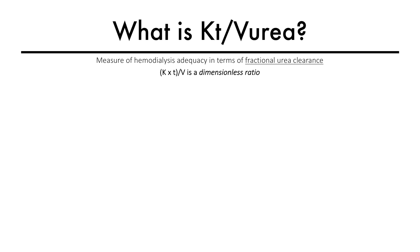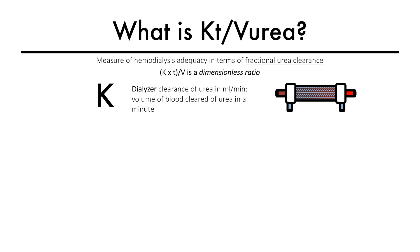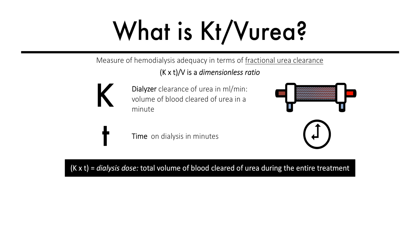It is a mathematically computed dimensionless ratio and has three components. The first is K, which is the dialyzer clearance of urea in milliliters per minute — that is, how many milliliters of blood can this dialyzer clear of urea in one minute. Second is T, or time on dialysis in minutes. KT equals dialysis dose — that is, the total volume of blood cleared of urea during the entire treatment session.